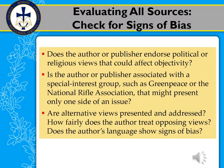Here are some ways that you can check for signs of bias. Bias isn't always a terrible thing — sometimes we know we're bringing in a source that has some bias, and we explain that to our readers, maybe showing various sides of an issue. So we can use some biased sources now and then, but we want to be aware of what we're working with. Number one: does the author or publisher endorse political or religious views that could affect objectivity? Look around at different articles by an author or around on the website — that's about sponsorship again.